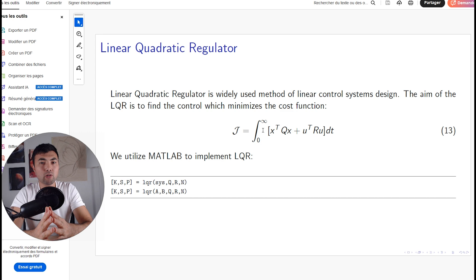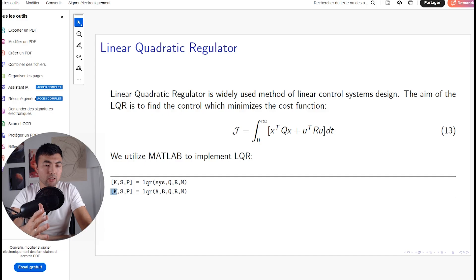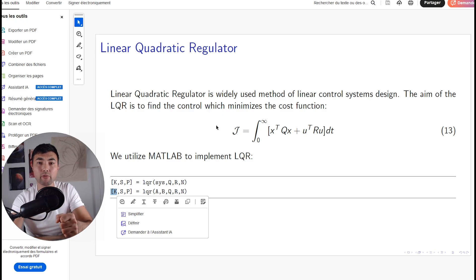Once we define the cost function, we have a simple function called LQR in MATLAB, and it generates the gain. And this gain will allow us to minimize the cost function we defined.